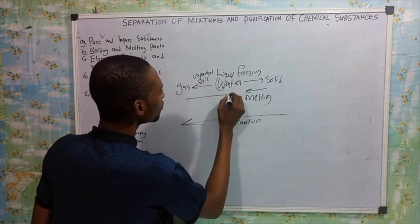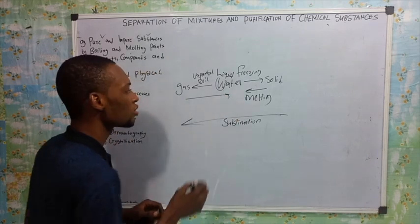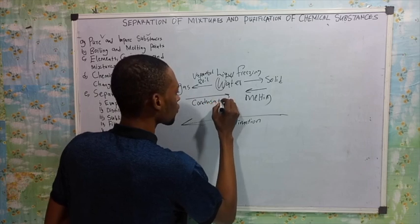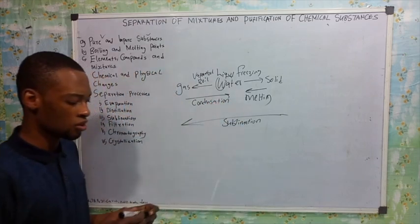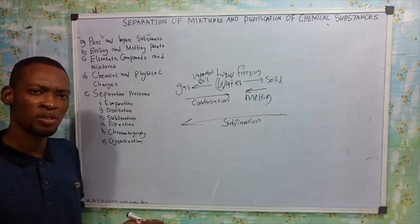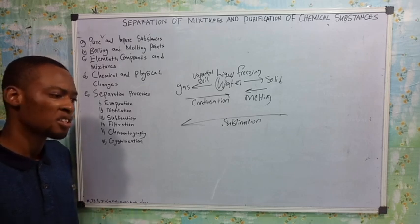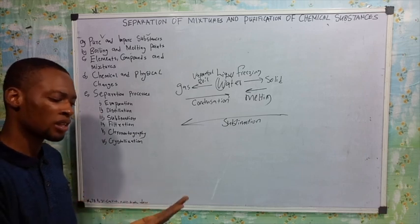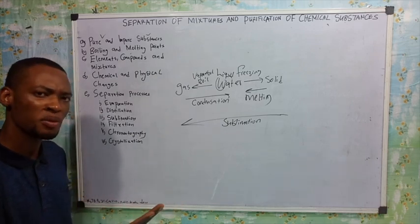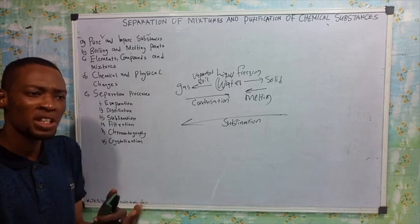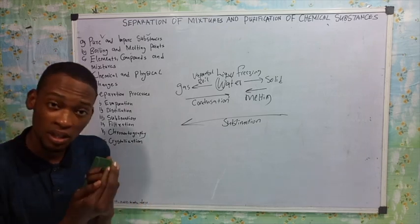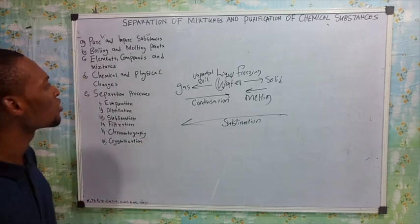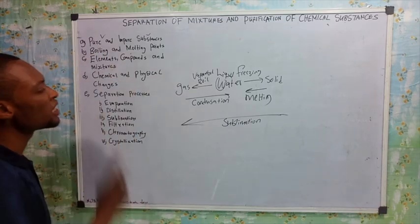Gas can change to liquid — that's called condensation. For example, if you go close to boiling water and put your hand on the vapor, then remove your hand, the vapor will begin to condense and change to liquid. So that's condensation. Our main points of focus are boiling and melting.